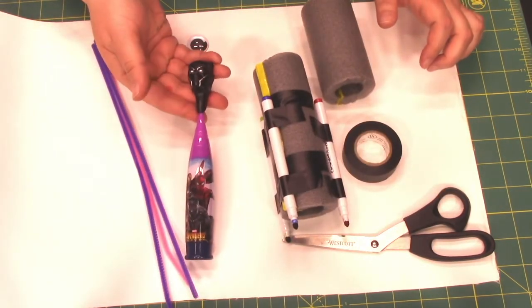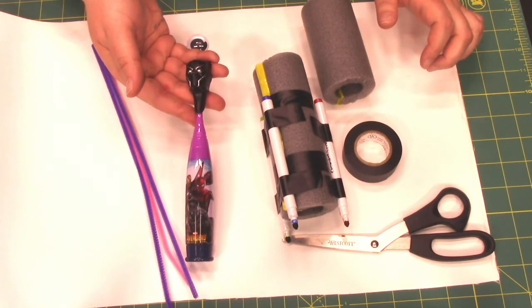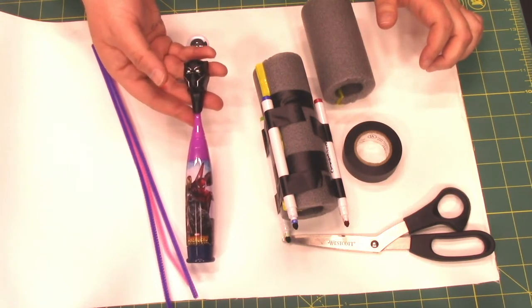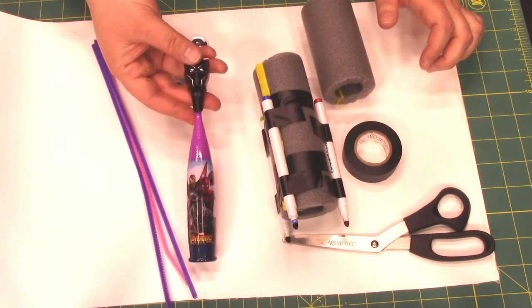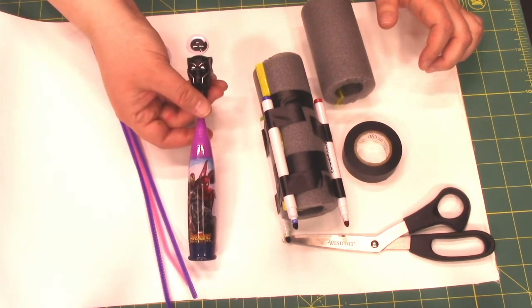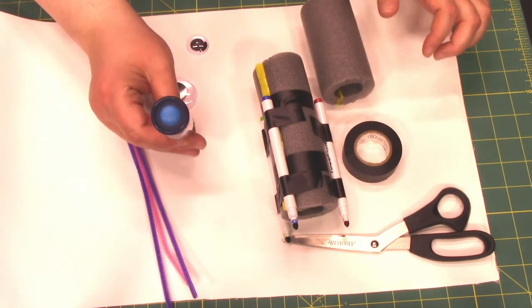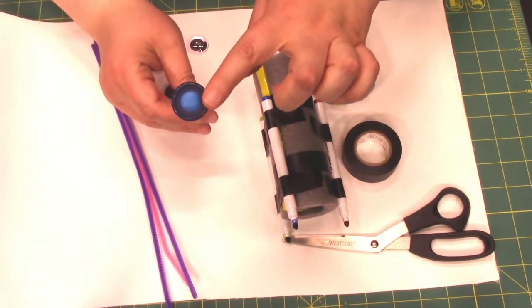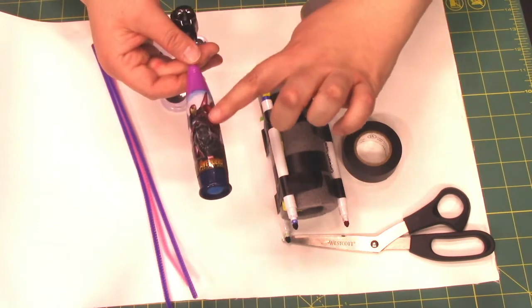You are also going to need an electric toothbrush. And this is a toothbrush that I found at a dollar store, so you can get them pretty cheap. You don't really need an expensive toothbrush for this project. The one thing you do want to do, though, is find a toothbrush that has an on-off switch on the bottom, not on the side.